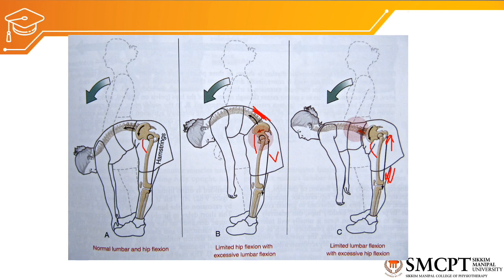Regular training and maintaining flexibility through stretching can reduce the chance of injury at the low back and hip joint. Strengthening of the core muscles — rectus abdominis, internal and external obliques — stretching and strengthening of the lumbar extensors (erector spinae), strengthening of gluteus maximus, and stretching of the hamstrings, iliopsoas, and rectus femoris will maintain normal lumbopelvic rhythm and reduce the chance of injuries.